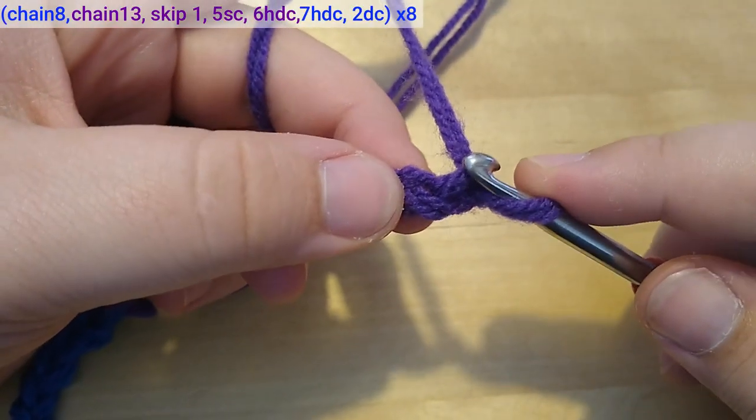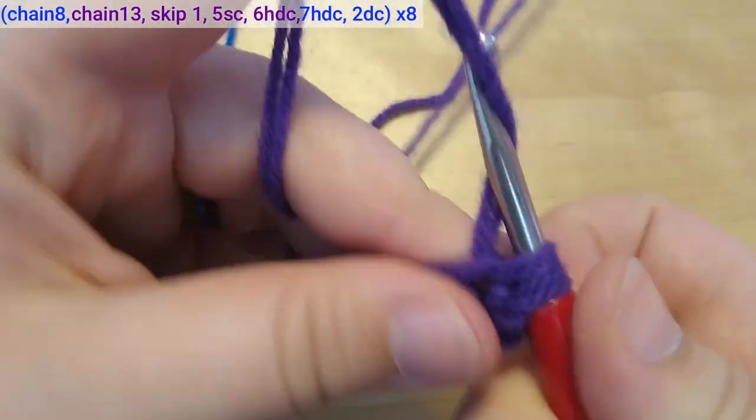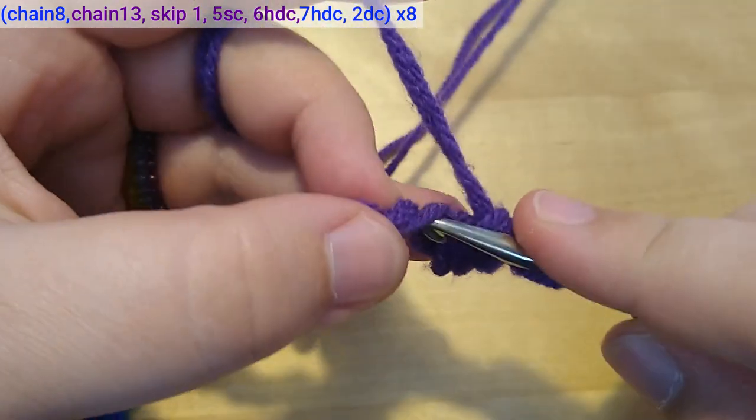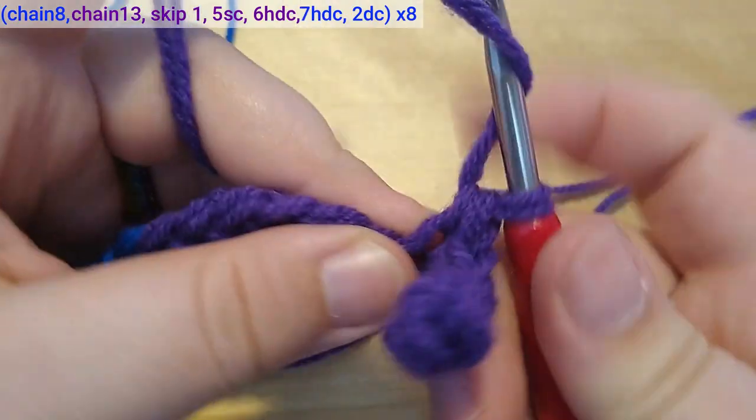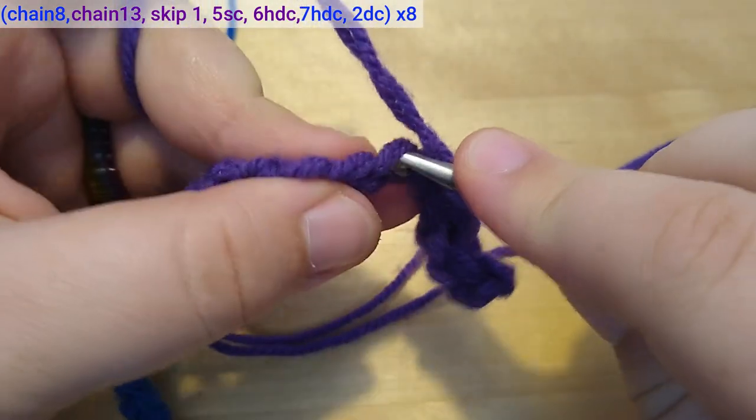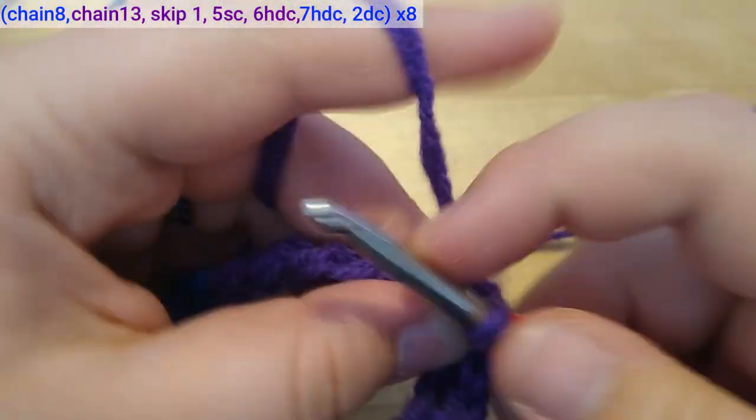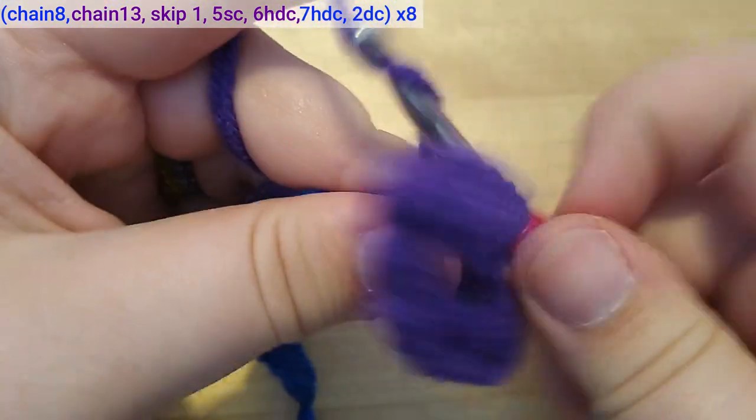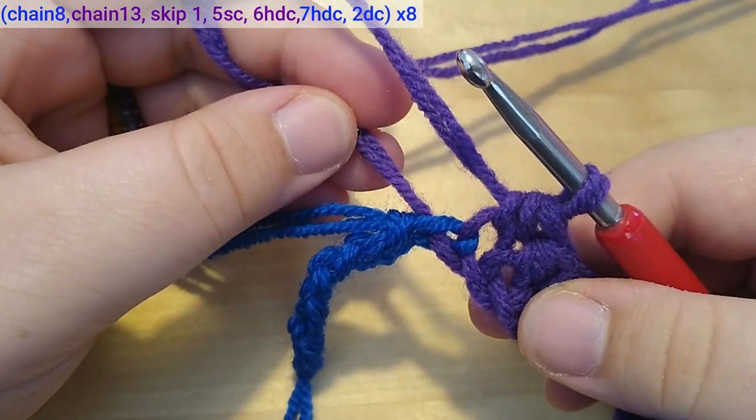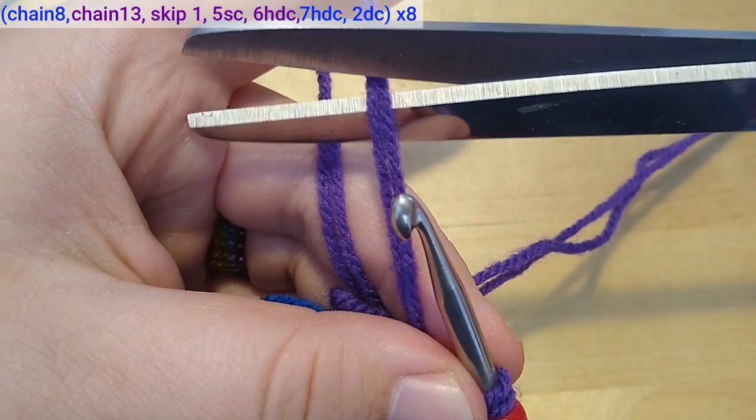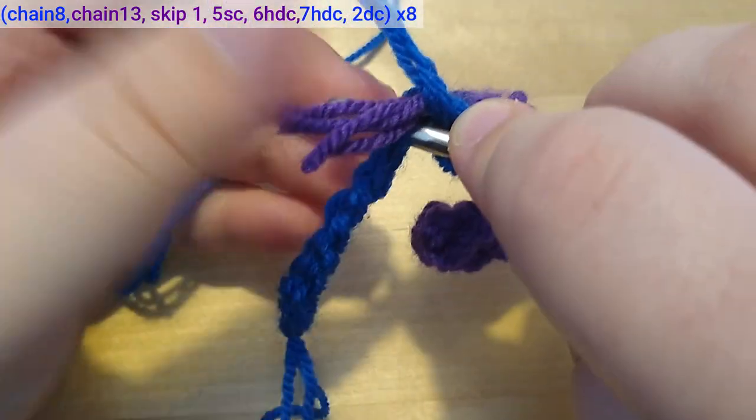Then I'm skipping the first chain from the hook and make 5 single crochets into the next 5 stitches. Next up are the 13 half double crochets and 6 of them are made in purple. Now the color changes back to blue, so I'm cutting off my purple yarn, tying off the ends and tying them in the next half double crochets.